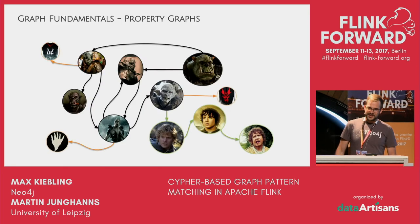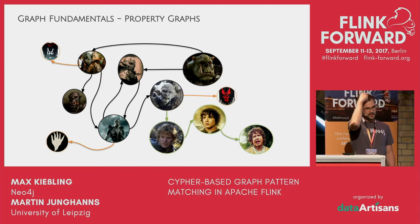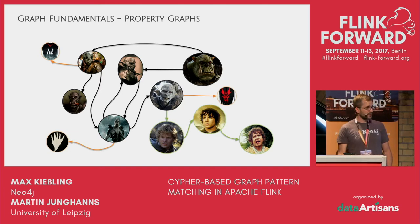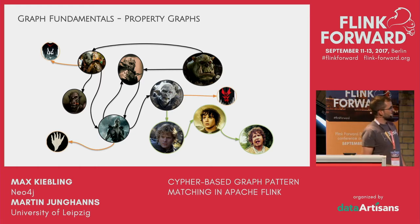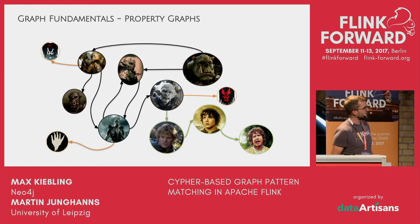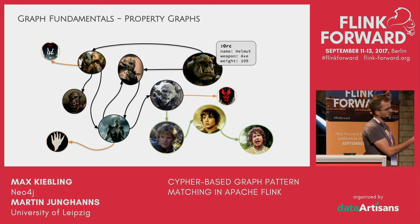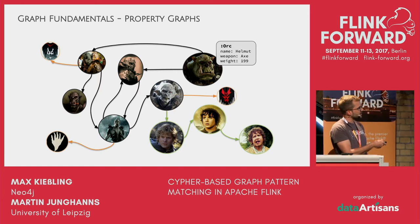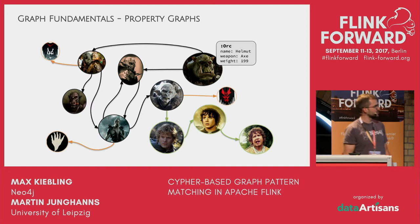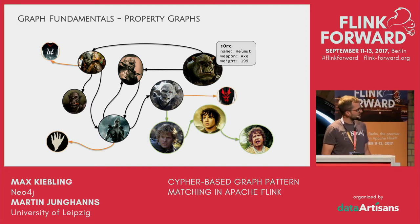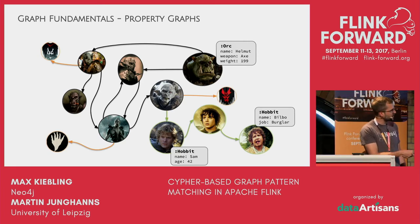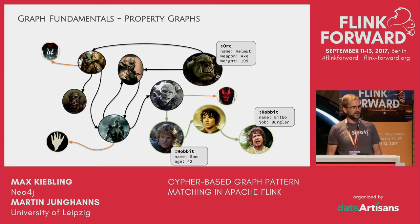Let's start with some basics. The data model used in Neo4j — and now also in Flink — is called the property graph model. In a property graph, you have vertices, which we also call nodes. Nodes have at least one label and properties as key-value pairs, for example: name 'Helmut', weapon 'X', weight 199. You can distinguish different kinds of vertices by their label, such as the Hobbit label here. The property graph model is schema-free.